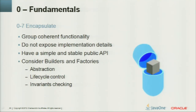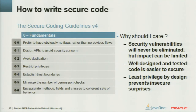Encapsulate: group related functionality, do not expose implementation details, and don't let people poke into your public non-final fields. Have a simple and stable API with documented behavior. Consider builders and factories for abstraction, lifecycle control, and invariant checking. These goals apply not only to security but to well-designed software in general. That concludes the fundamentals section.